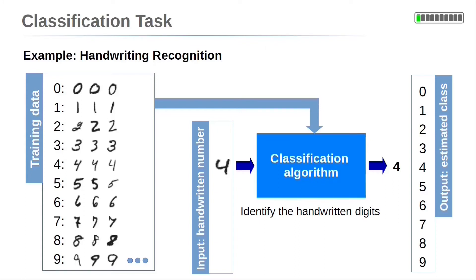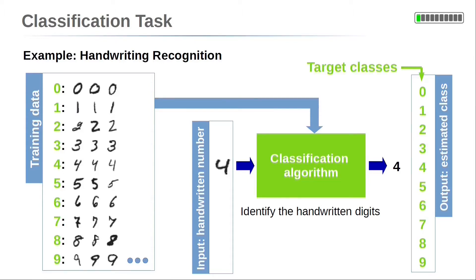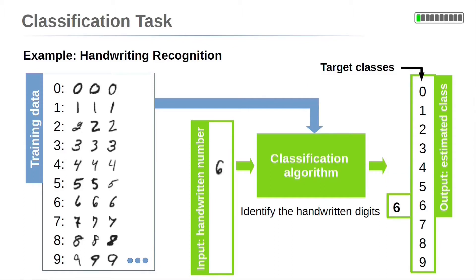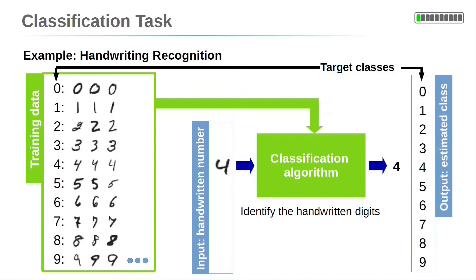Let's start with a simple example of a typical classification task. Here, handwritten digits are recognized by a classification algorithm. The 10 different digits from 0 to 9 are represented by 10 different classes, so each digit is a so-called target class. The algorithm takes an image of a handwritten digit as input, then identifies the digit with the corresponding class. The algorithm is trained with samples of handwritten digits where the corresponding classes are known, after which it can identify handwritten digits.